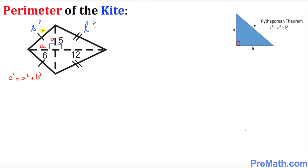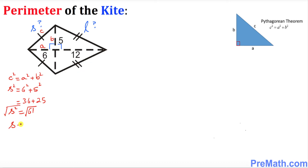So in our case, s squared equals 6 squared plus 5 squared, which gives us 36 plus 25, equal to 61. So s squared turns out to be 61. Taking the square root, s equals the square root of 61. Thus this side turns out to be square root of 61.